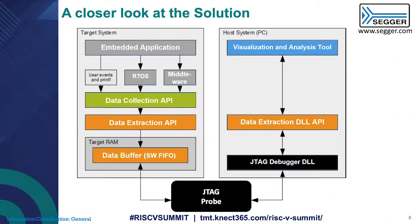Here's a closer look at the solution. You have the target system on the left and the host system on the right. On the target side, a data collection API passes information to the data extraction portion of the software, which goes into a data buffer that hooks up to your J-Link probe. On the host side, you have a DLL driving the debugger, a data extraction DLL, and on top, the app you use to visualize and analyze all that data.